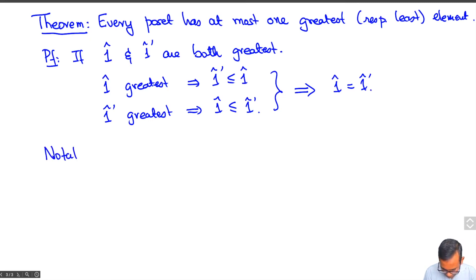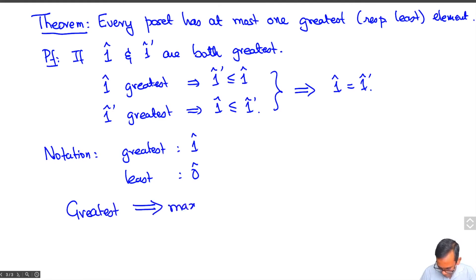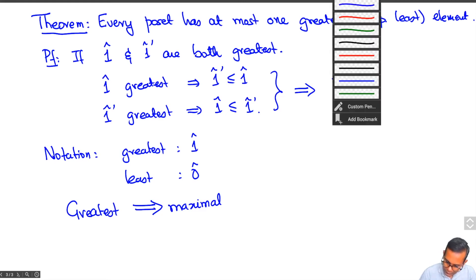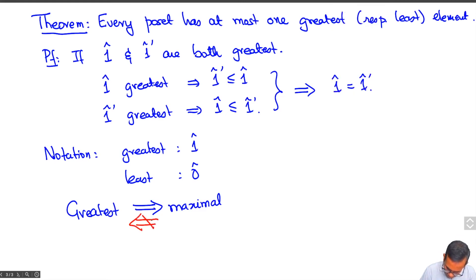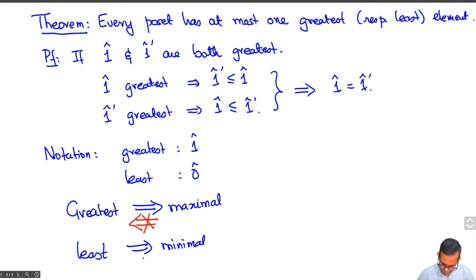The greatest element of a poset is usually denoted 1-hat, and the least element is usually denoted 0-hat. One important observation: the greatest element is always maximal, but the converse is not true — you can have maximal elements which are not greatest. Maximal elements need not be unique. Similarly, a least element is necessarily minimal, but again the converse is not true.